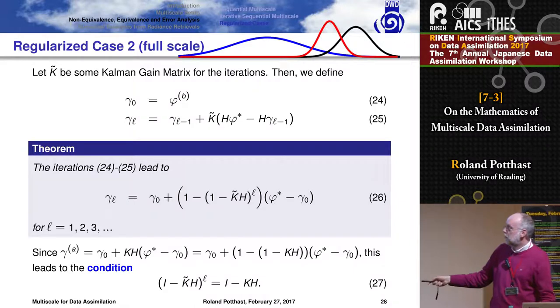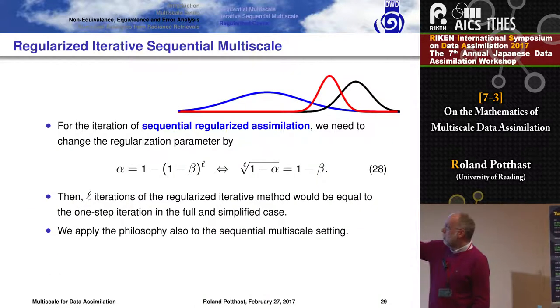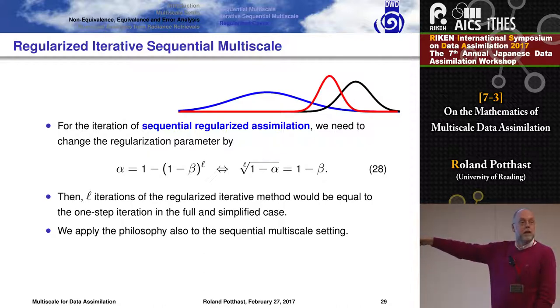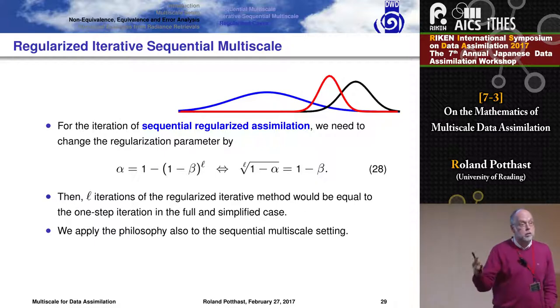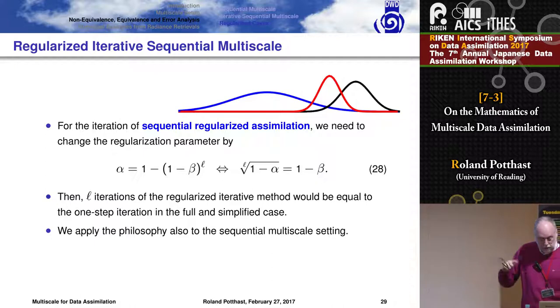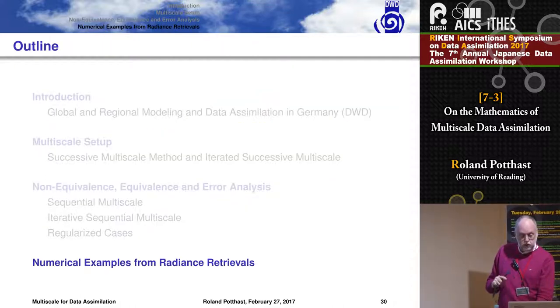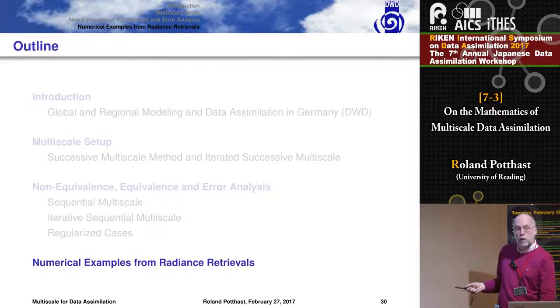So what the suggestion is, basically, if you have a weighting which is alpha in the one step case and now you want to do regularized, so with background term iteration, take a beta weighting and solve this type of equation. Take the Lth root of 1 minus alpha to calculate your beta and then use that and you will get the same solution in the case of iteration as if you would do one step. And you can take advantage of all your iterations. So we tried this out. This is a theory. The theory is a proof. For simple setups you can just prove that this works.